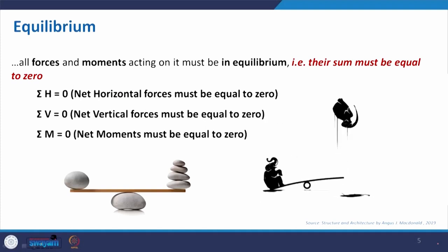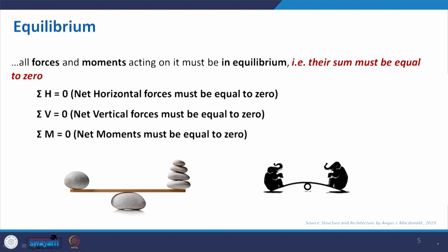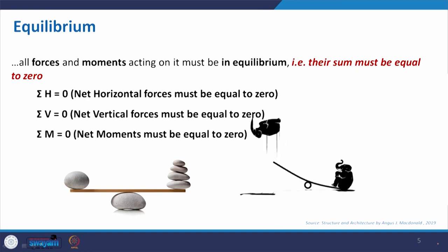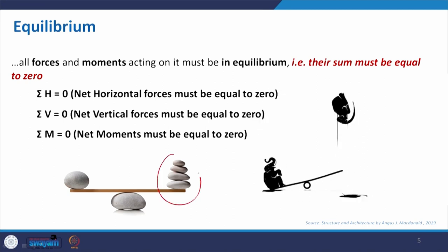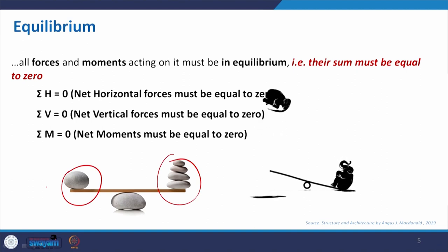We will talk about these four properties — equilibrium, geometric stability, strength, and rigidity — which are the requirement of a structure to fulfill its primary function of supporting the building against all applied forces. Looking at equilibrium: net horizontal forces must equal zero, net vertical forces must equal zero, and the moment must also equal zero. We have seen this same example earlier in the lecture.